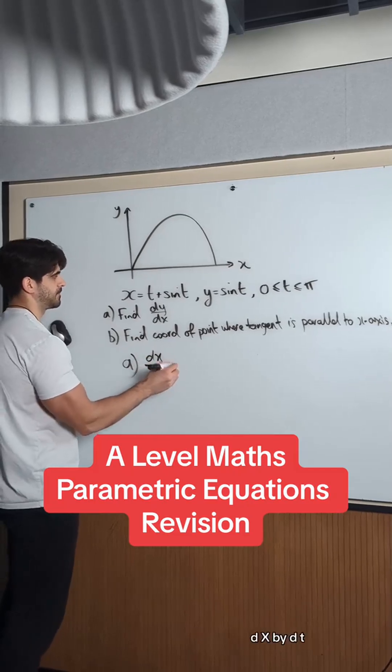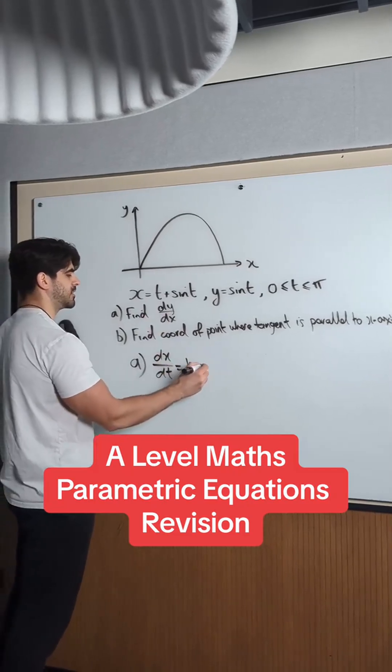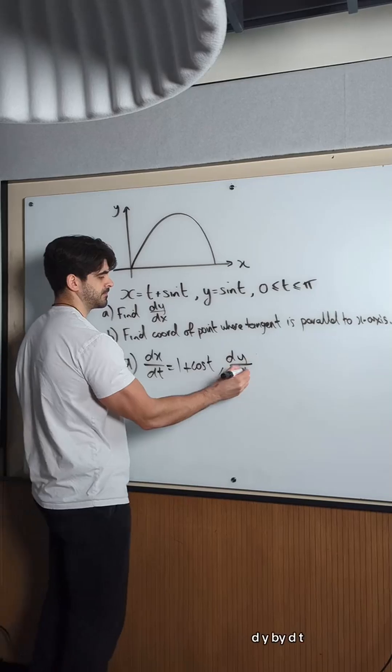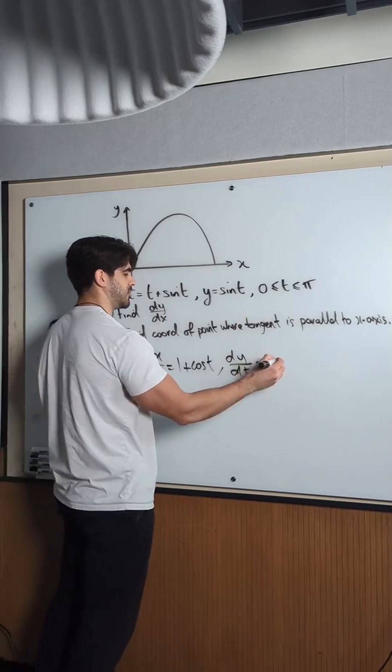dx by dt: t differentiates to 1, sin goes to cos. dy by dt: sin goes to cos.